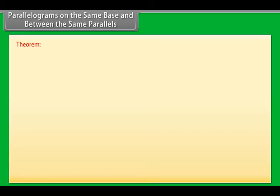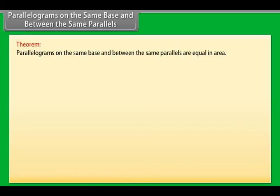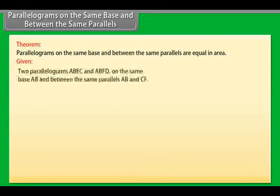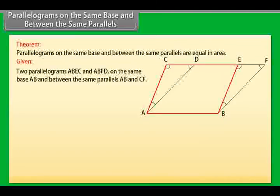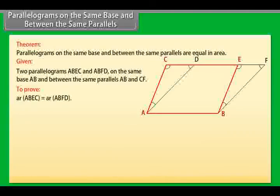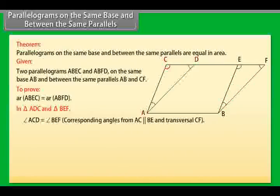Theorem: Parallelograms on the same base and between the same parallels are equal in area. Proof. Two parallelograms ABEC and ABFD on the same base AB and between the same parallels AB and CF are given. We need to prove that area of ABEC equals area of ABFD. In triangle ADC and triangle BEF, angle ACD equals angle BEF because these are corresponding angles from AC parallel to BE and transversal CF. Mark it as (1).